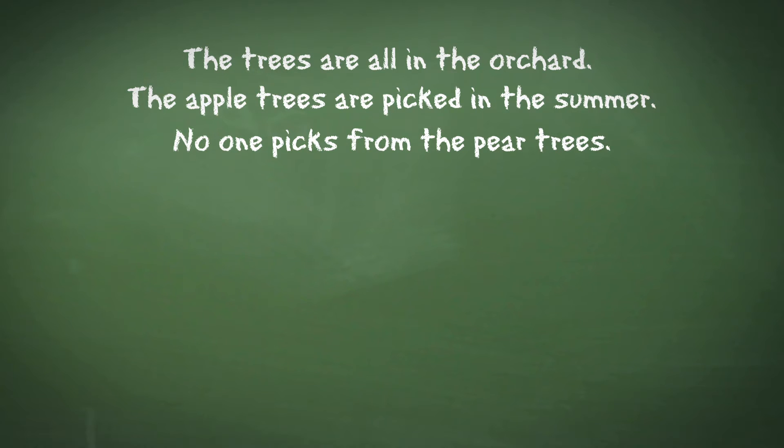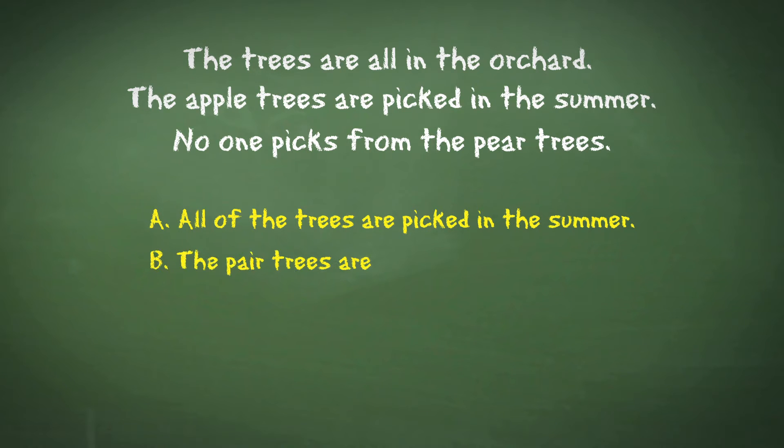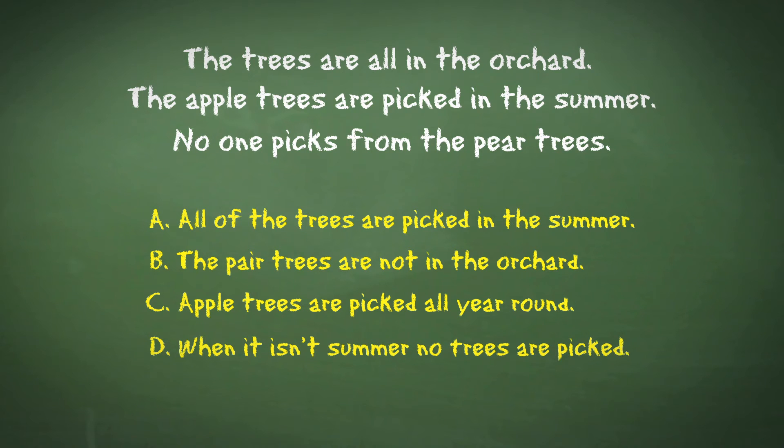And the answer choices are: A. All of the trees are picked in the summer. B. The pear trees are not in the orchard. C. Apple trees are picked all year round. D. When it isn't summer, no trees are picked. And finally, E. Trees picked in the summer are in the orchard.